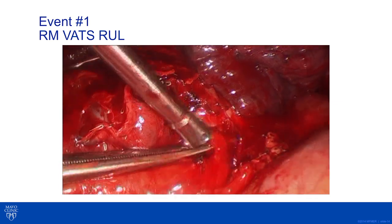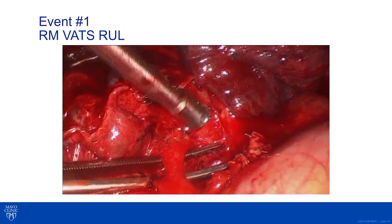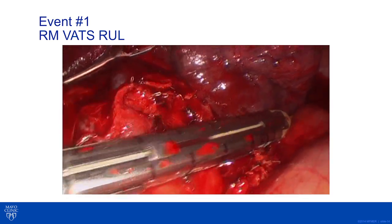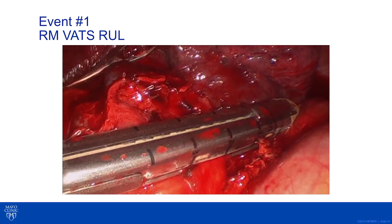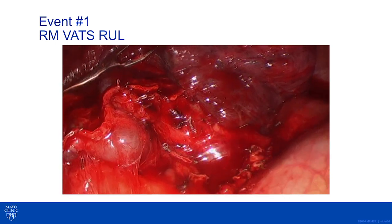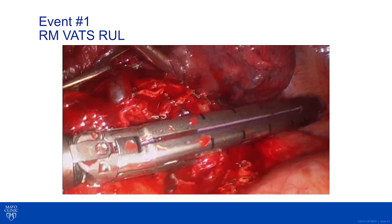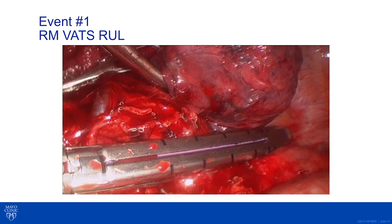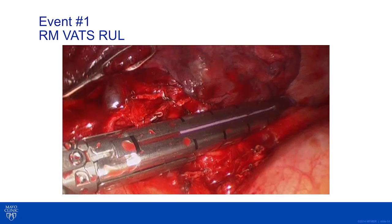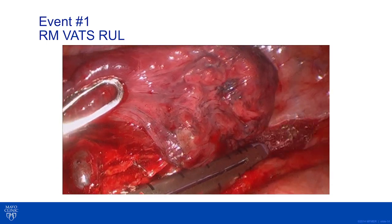The truncus anterior is completely divided, the pulmonary veins are divided, and the posterior ascending pulmonary artery branch is encircled, stapled, and divided. The only remaining structure is the bronchus. It is important when passing the stapler to go completely around the bronchus and not through it or into the lung parenchyma. Taking tension away during stapling will help avoid problems.